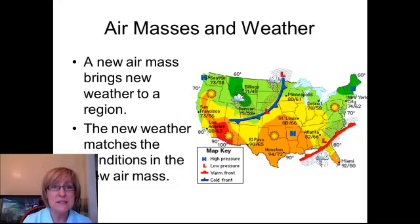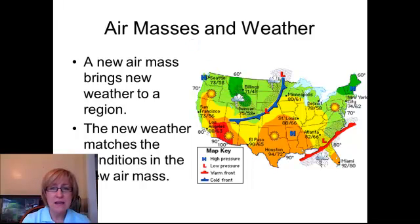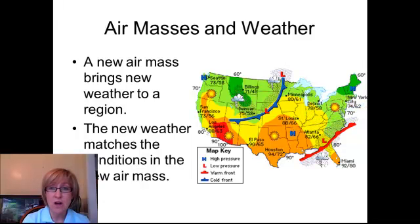An air mass brings new weather into a region. Looking at this weather map of the United States — this is one that actually happened — the blue and red lines are showing the frontal boundaries. Behind that blue line, in the middle of the United States, the weather is cool and rainy. In front of that blue line, which shows the frontal boundary, is a different air mass — a lot warmer and dry, with clear skies. The new weather in an area matches the conditions in the air mass coming through.